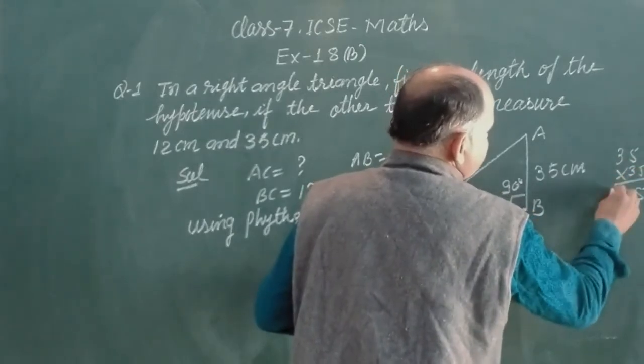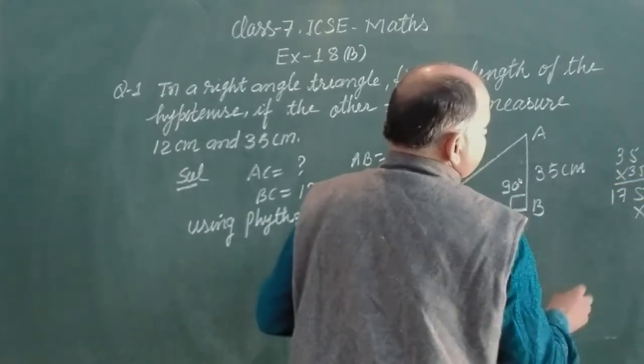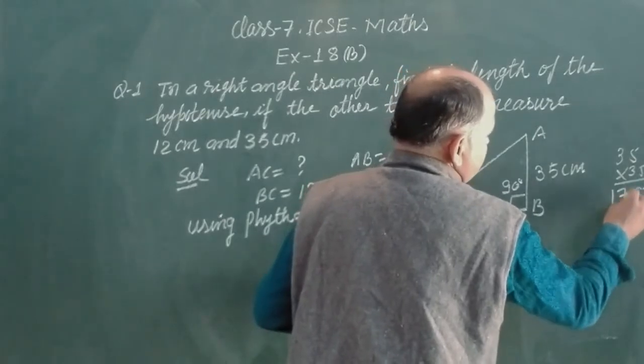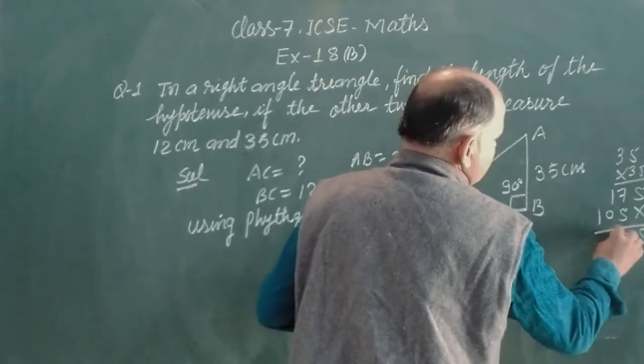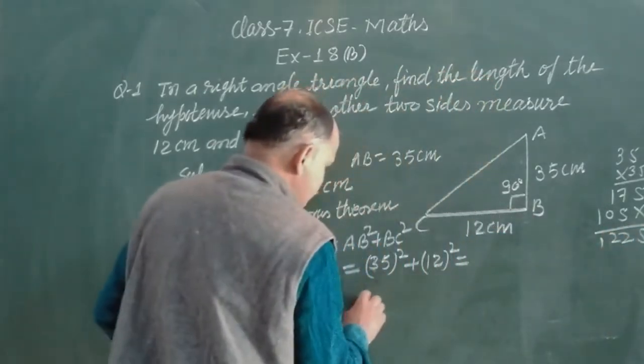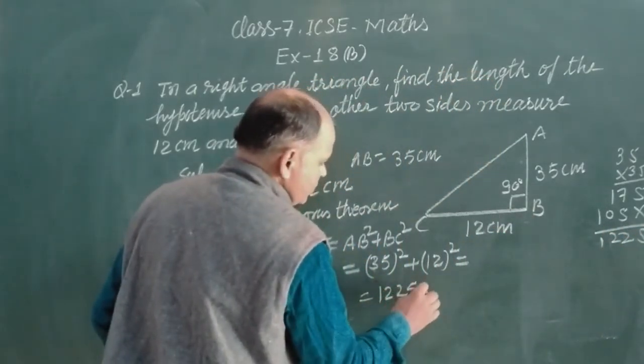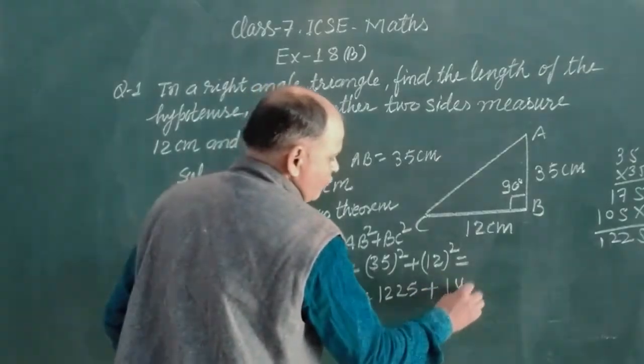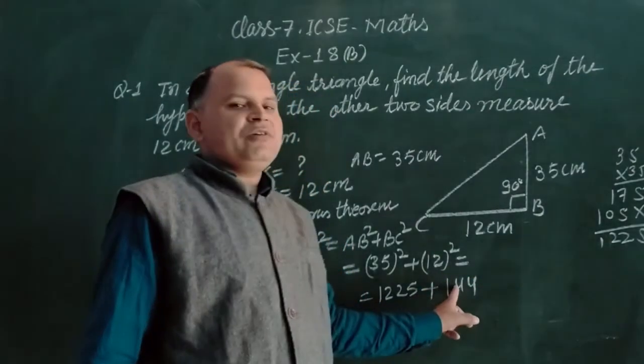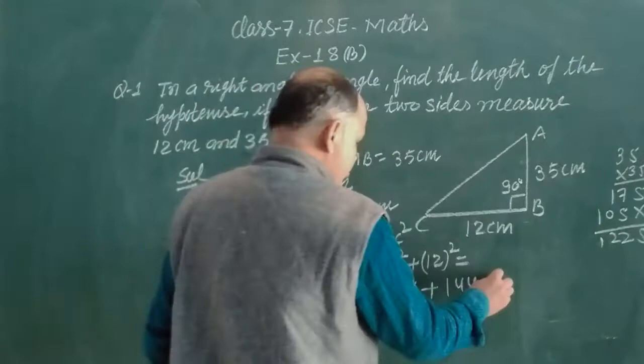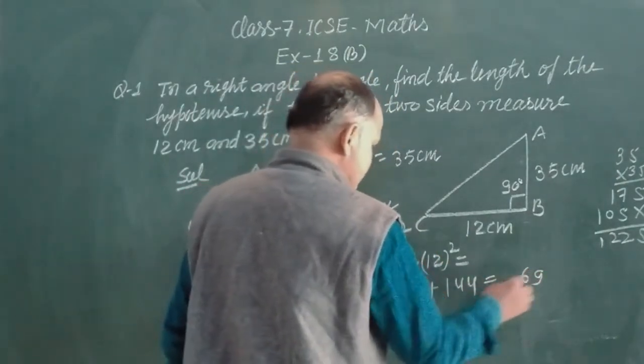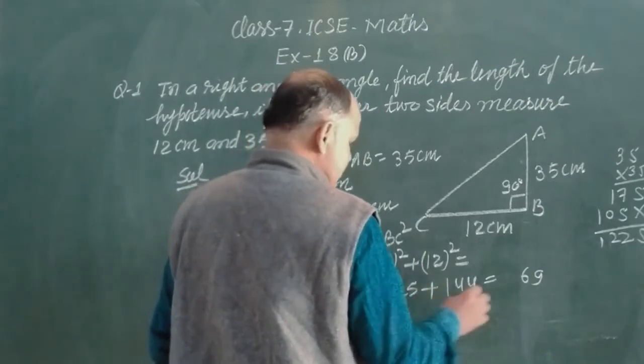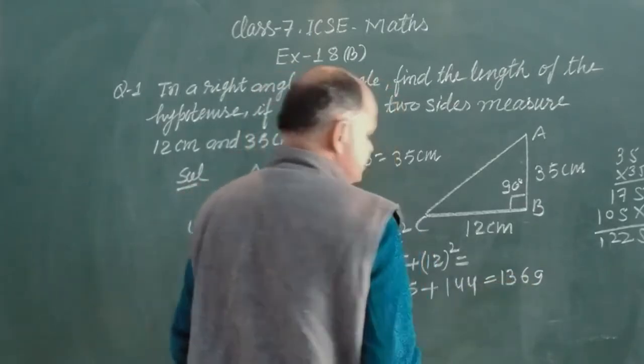35 times 35 equals 1225, and 12 times 12 equals 144. So we got 1369.